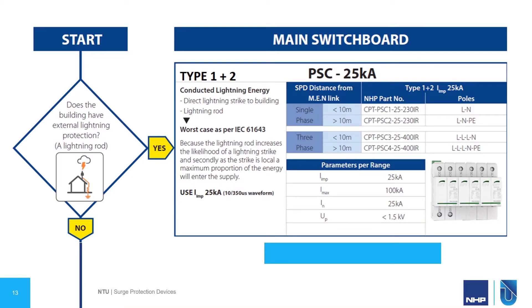The PSC 25 kA has an impulse current of 25 kA, a maximum current of 100 kA, a nominal current of 25 kA, and a voltage protection of less than 1.5 kV. Part numbers can be selected from the chart depending on whether it's a single-phase or three-phase installation, and whether the installation is less than or greater than 10 meters from the MEN link.